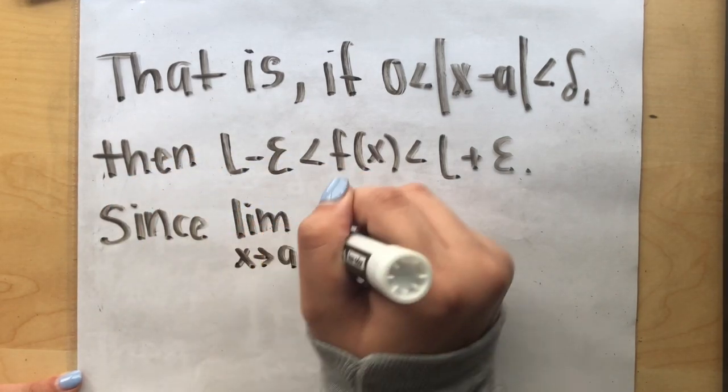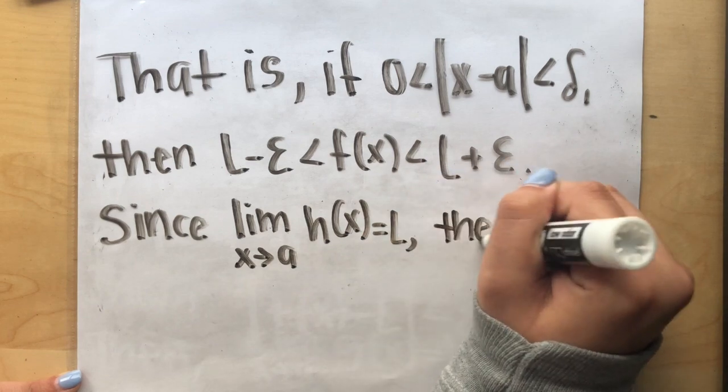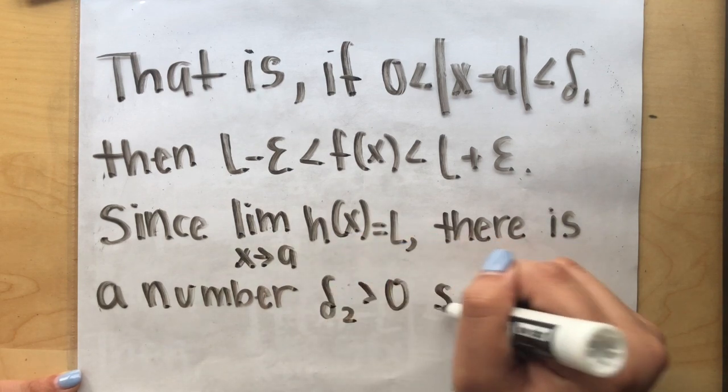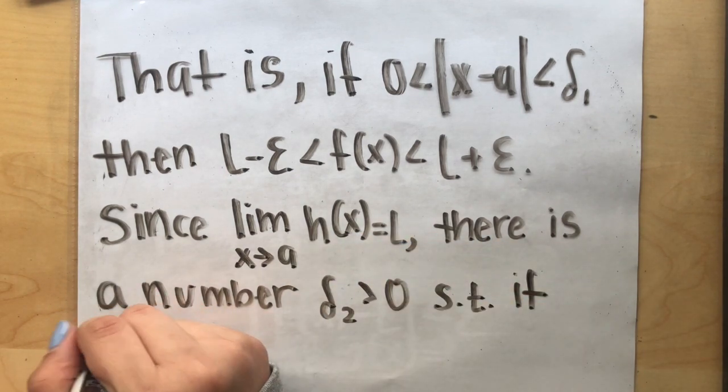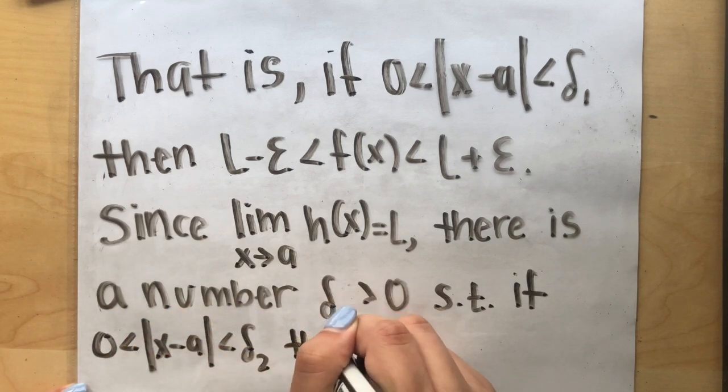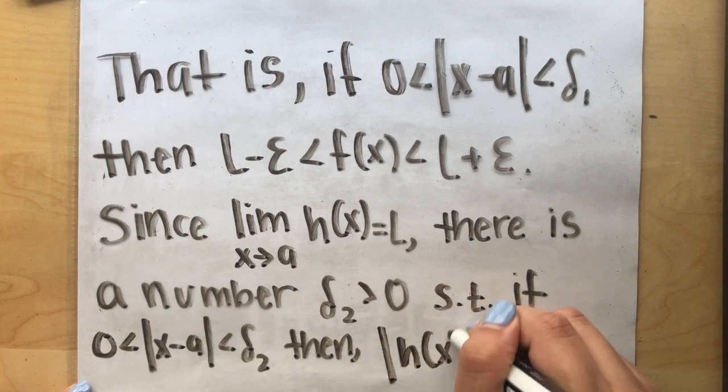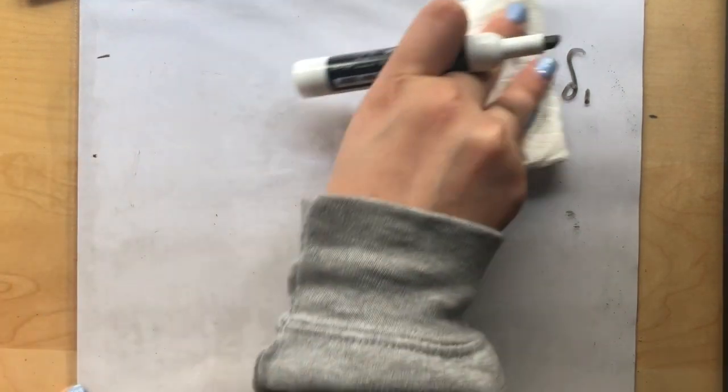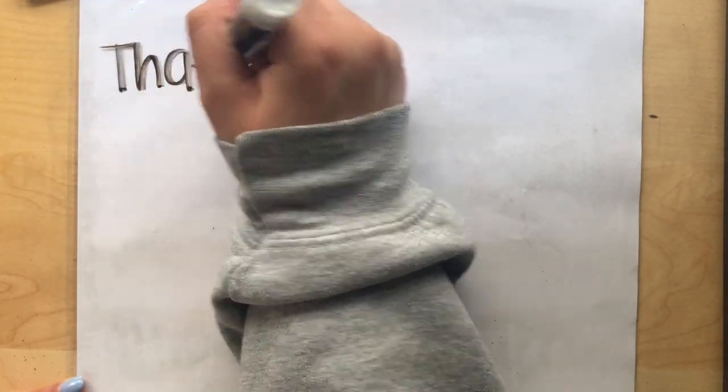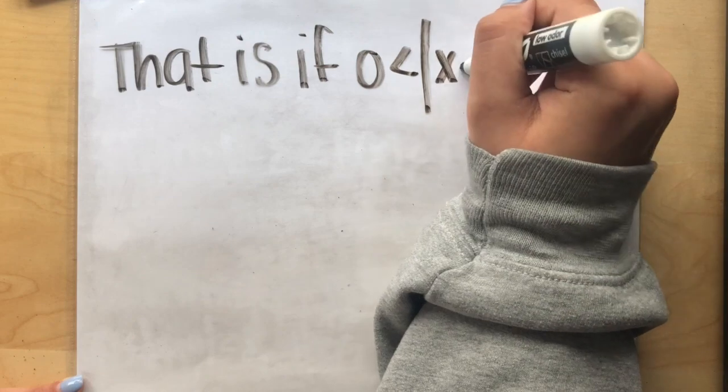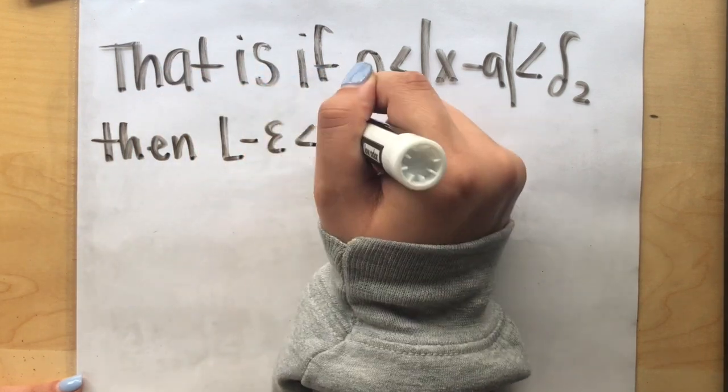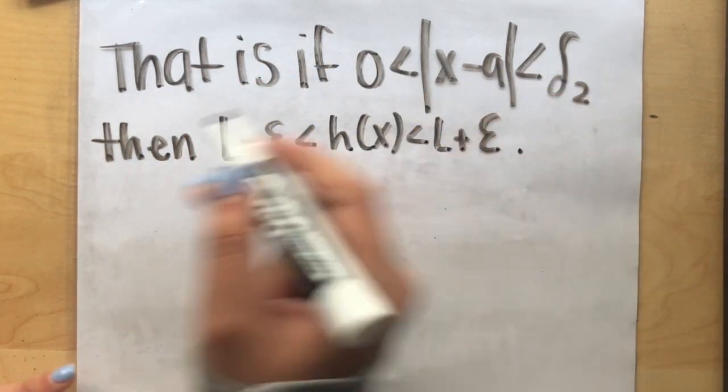Since the limit of h of x as x approaches a is equal to L, there is a number delta sub 2 which is greater than 0, such that if 0 is less than the absolute value of x minus a, which is less than delta sub 2, then the absolute value of h of x minus L is less than epsilon, then L minus epsilon is less than h of x, which is less than L plus epsilon.